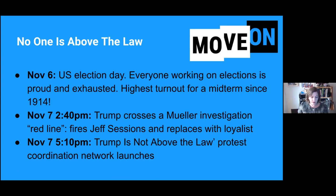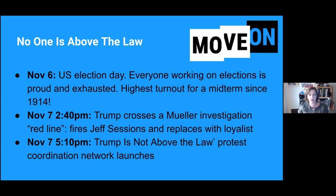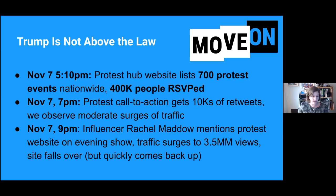Through the summer, the threat of mass protests appeared to be keeping various risks to the Mueller investigation at bay via the threat of collective action. But then the day after the election, Trump crossed a red line by firing Jeff Sessions and replacing him with a loyalist. The coalition had an emergency meeting about an hour after this happened and decided to launch the Trump Is Not Above the Law protest network.